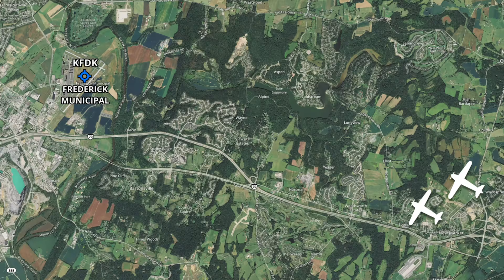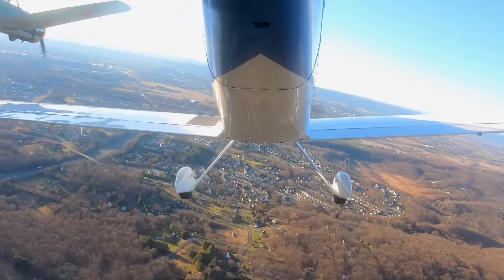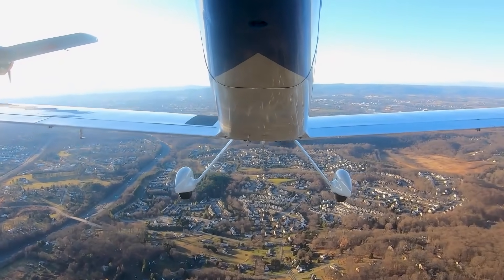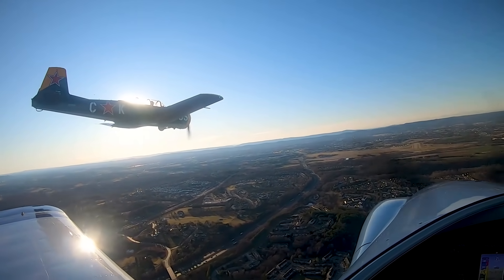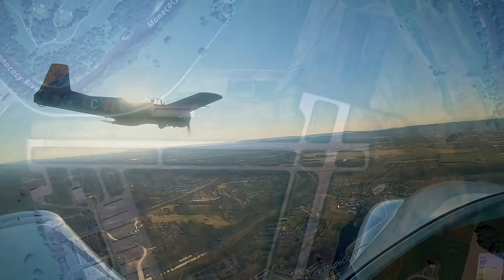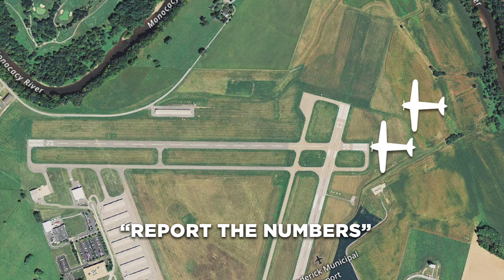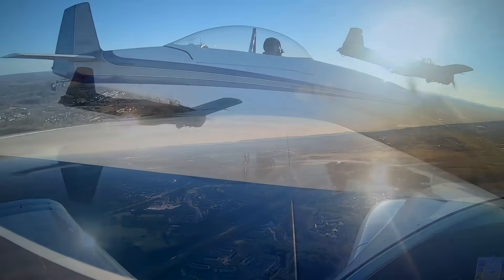The tower controller tells him to report a 5-mile initial or a straight-in for the landing runway. Jack 591, flight is turning inbound at 5, request in about 10 breaks. Jack 591, you can expect a left break, report the numbers. The tower controller tells the lead pilot to report crossing over the runway threshold and expect a left break.